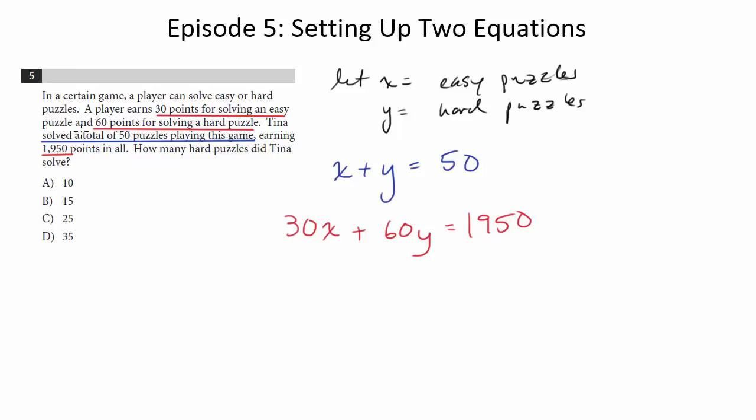So once we have the equation set up, now we just have to do systems of equations as we did on a previous question. And again, I like elimination, so that's what I'm going to use. So I'm going to get rid of one of these variables. Let me get rid of the X because that's an easy one to do. So to do that, I'm going to multiply the top equation by negative 30. So that's going to be negative 30X plus negative 30Y equals negative 1500. Don't forget to multiply by that number as well. And my other equation is 30X plus 60Y equals 1950.